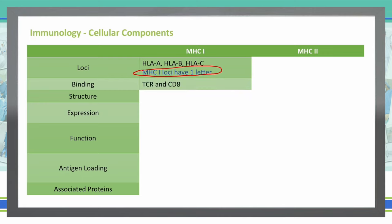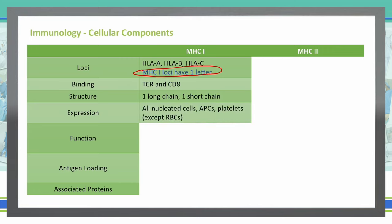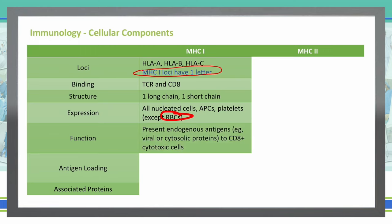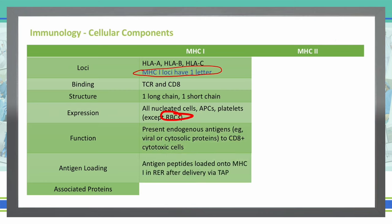MHC1 binds to the TCR and CD8 receptors, and they are made up of a long chain and a short chain. They express on all nucleated cells, APCs, and platelets, with the exception of red blood cells. This complex takes endogenous antigens — viruses, cytosolic proteins — and presents them to CD8 cytotoxic T cells. Antigen peptides are loaded onto the MHC1 receptors at the rough endoplasmic reticulum after delivery via the transporter associated with antigen processing. The associated proteins are the beta-2 microglobulins.